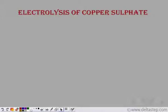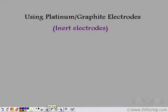Let's see how copper sulphate undergoes electrolysis and how the nature of electrodes plays a very important role in the formation of the products. So let's start by using inert electrodes. We carry out the electrolysis of copper sulphate solution using platinum or graphite electrodes — both are inert electrodes, that is they do not participate in the reaction.